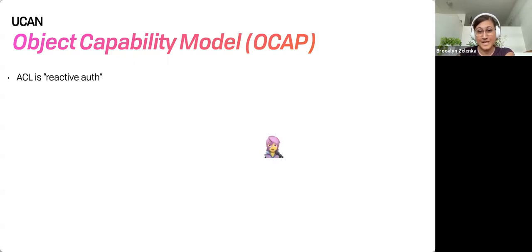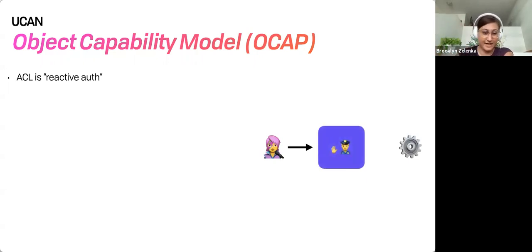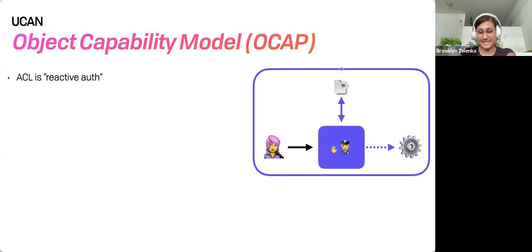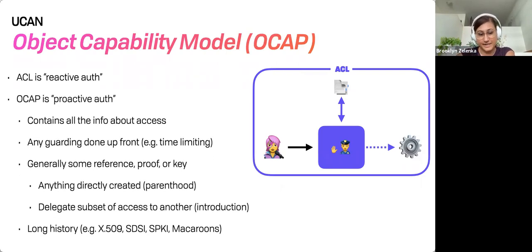Here's the user — they want to get some stuff on this server and they send a message. They're stopped by an auth process, which checks if they're on a list and if they have access to that data, if they're allowed to see it, modify it, or send an email. If they are, then maybe they get access to that resource. That's how most Unix-type systems work — just lists of who's allowed to do this, what group are you in, and every time a request comes in, we check: are you on the list? OCAP is the opposite — it's proactive auth. The picture is much more lightweight.